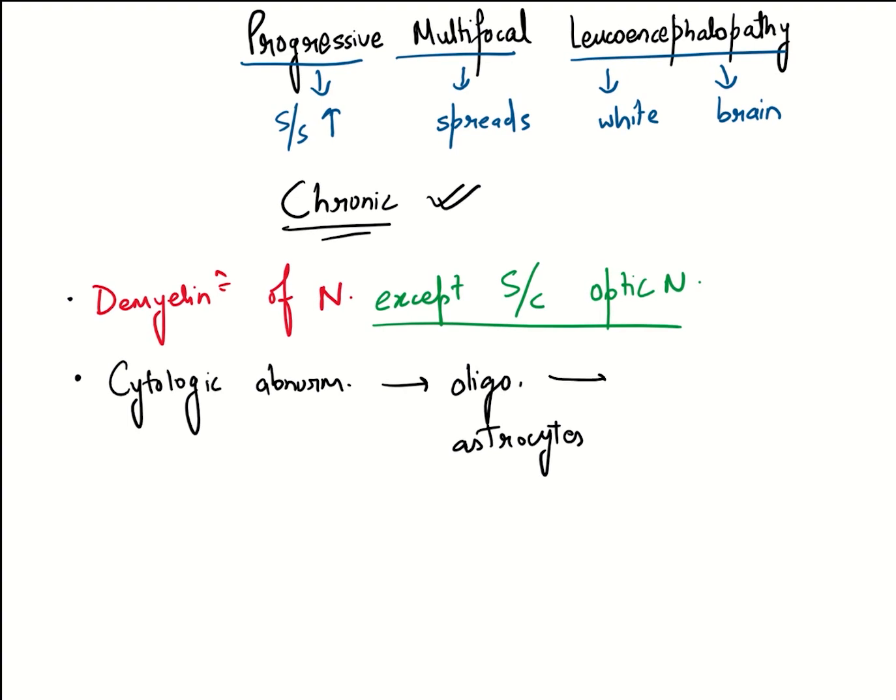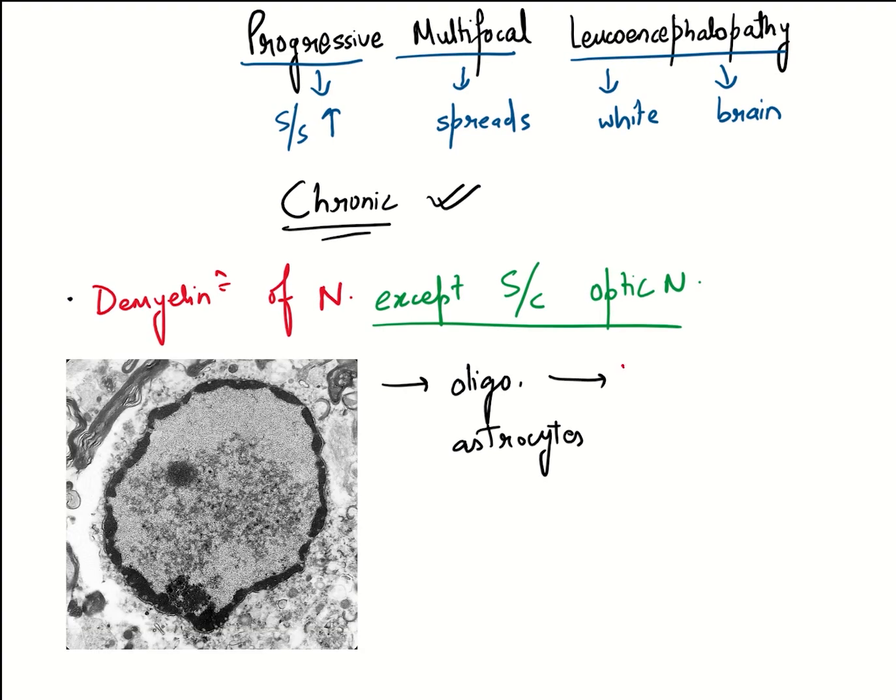The oligodendrocytes contain the JC virus particles. You see these small particles? These are the JC virus arrays, as we call them.